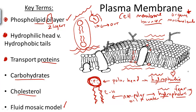Transport proteins are used for structure and for transporting substances, primarily in and out of the cell. This happens through active and passive transport, depending on the substance. It is an important way to get substances — especially those that are large or charged — in and out of the cell. We can talk about this more in other videos about active and passive transport.